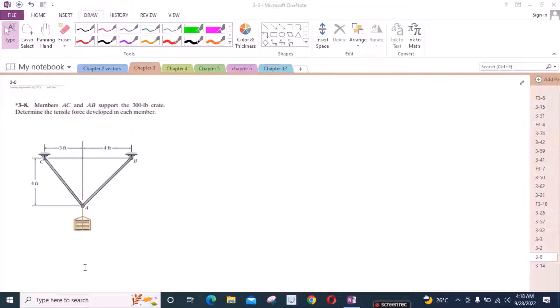To solve this problem, first of all, we have to find some angles. Let's say we have to find this angle right here and this angle. Let's call this phi and this one as theta.